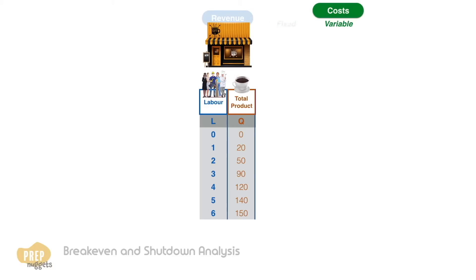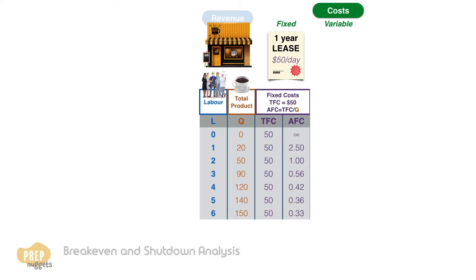Fixed costs cannot be changed in the short run. Let's say you signed an agreement to rent a space for $50 per day for one year — this is regarded as a fixed cost, which is the same regardless of the output. If we divide this fixed cost by the number of coffees served each day, we get the average fixed cost.